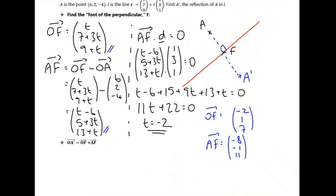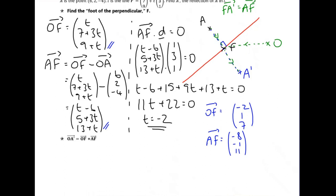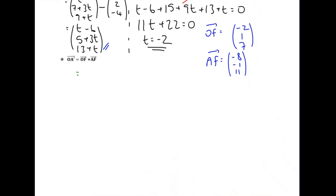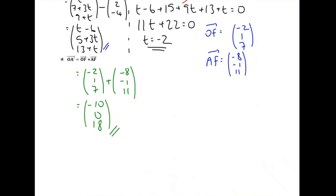To get the position vector O to A dash, we go along vectors we already know: go to point F which we've just worked out, then along F to A dash. F to A dash is the same direction and magnitude as A to F, so we can use that vector. Alternatively, go to A and then go along AF again. So O to A dash = OF + AF = (minus 2, 1, 7) + (minus 8, minus 1, 11) = (minus 10, 0, 18). That's the position vector of A dash.